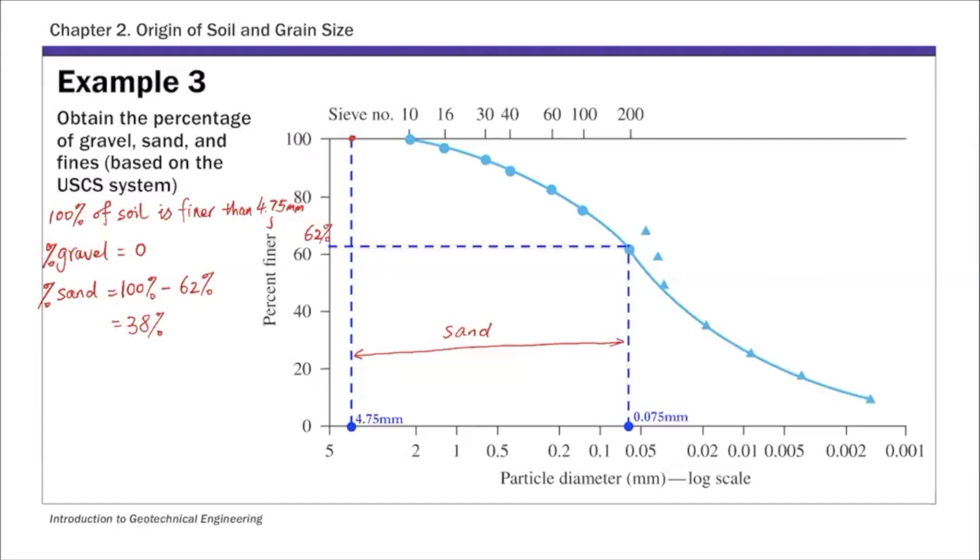And then anything smaller than 0.075 is classified as fines, which is basically silts and clay. Anything smaller, that's on this side, that's fines. And this value is 62 percent. Again from this graph, we know 0.075, the percent finer is 62 percent. So 62 percent of the soil in this sample is smaller than 0.075. So they are classified as fines.